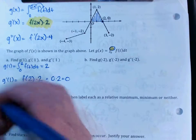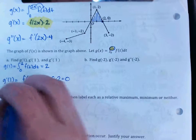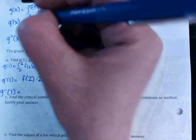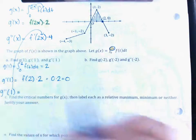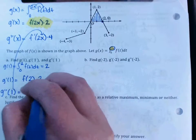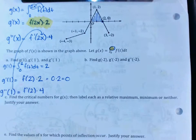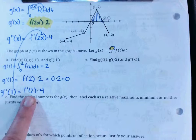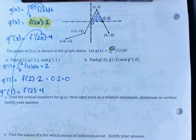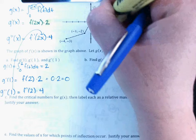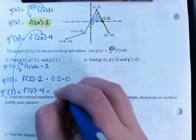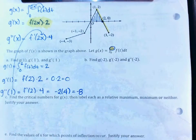Next, g''(1). Plugging 1 into g''(x) = f'(2x)·4 gives f'(2)·4. f'(2) is the slope at x = 2 — count rise over run on that line segment. The slope is negative 2. So negative 2 times 4 equals negative 8.